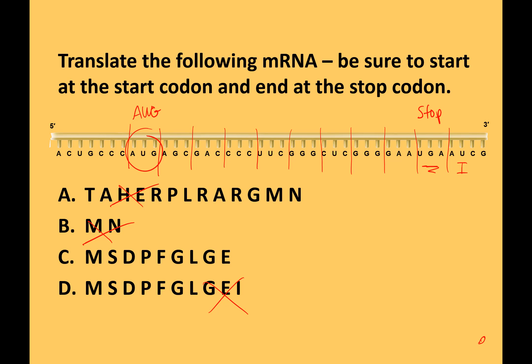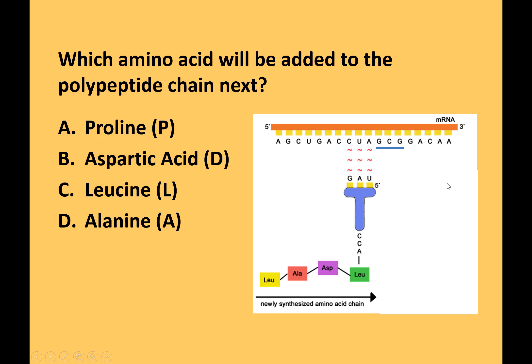Stop means stop. Which amino acid will be added to the polypeptide chain next? What you want to be reading is the mRNA codon. Leucine was already added with that tRNA, so the next amino acid would have the codon GCG, and that is alanine.